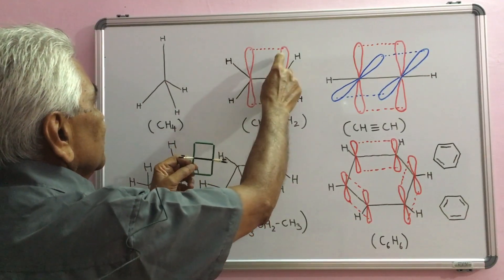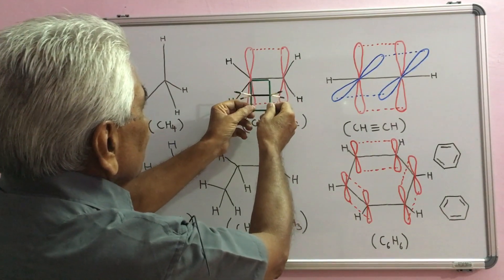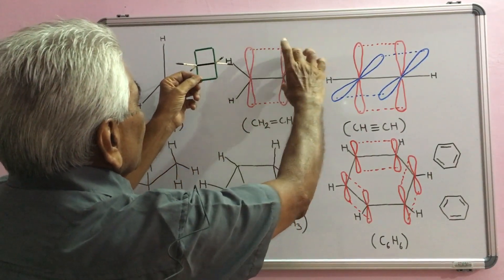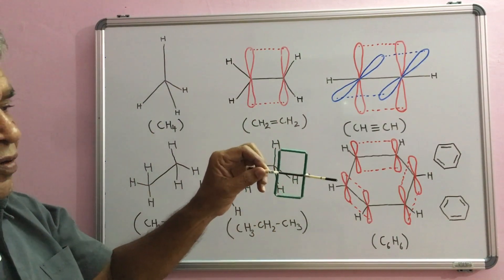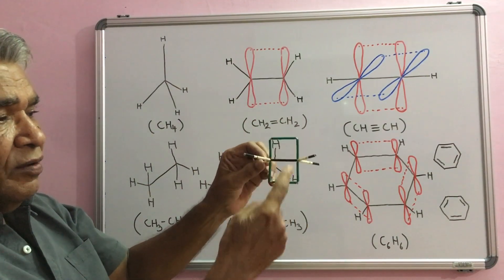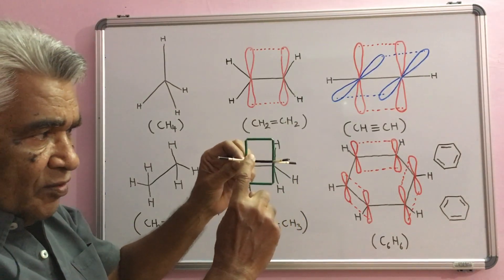P orbitals having one electron each stand perpendicularly and they overlap sideways forming this type of thing. This is a pi orbital encompassing the sigma bond.